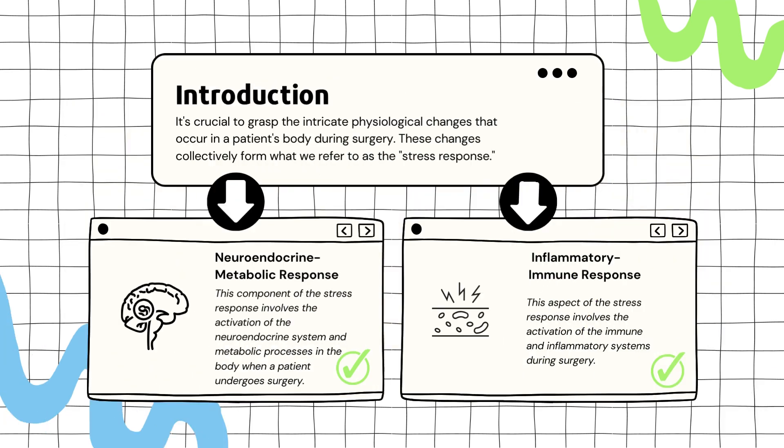It's crucial to grasp the intricate physiological changes that occur in a patient's body during surgery. These changes collectively form what we refer to as the stress response. This response can be broadly categorized into two main components, each with its unique set of effects and implications.